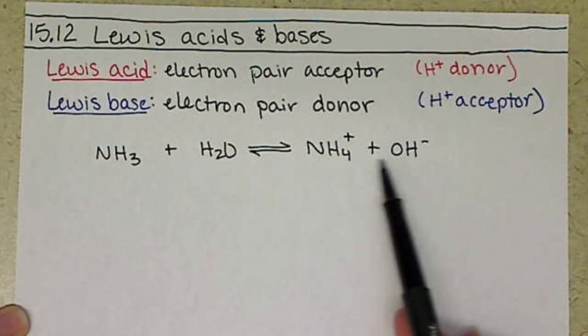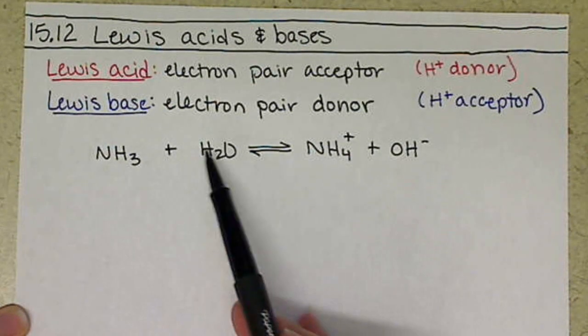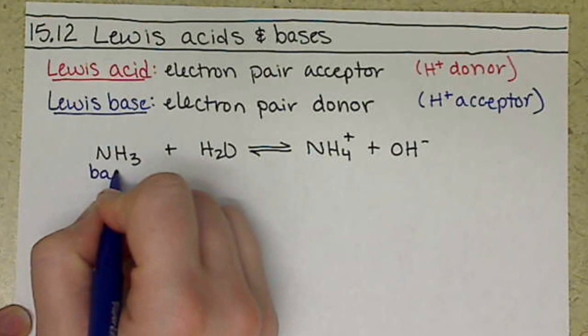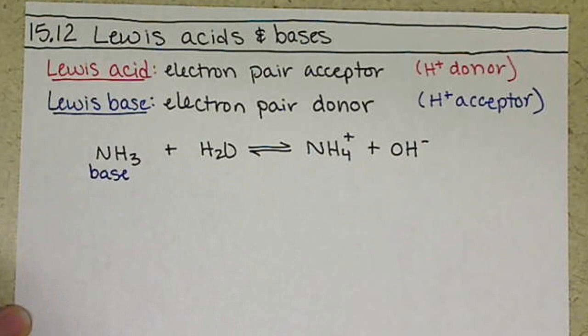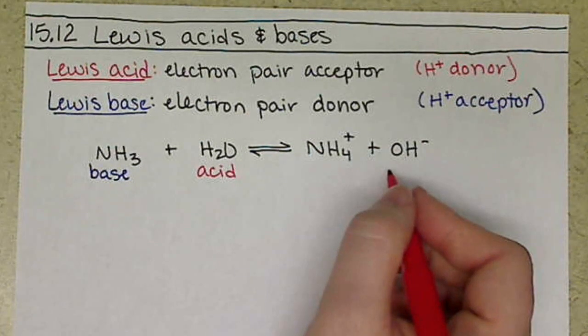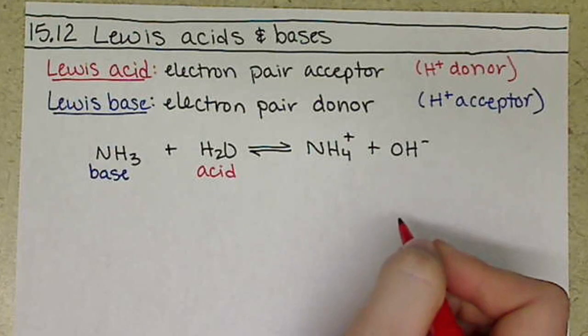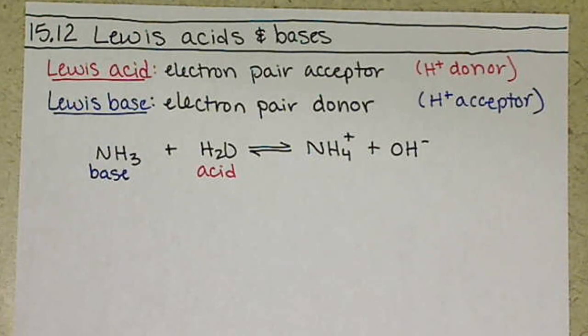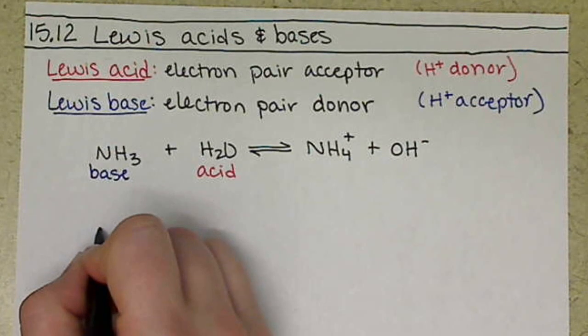Now, we looked at this identifying our base, our acid, let's just label those, our base, our acid, as where the proton's going. For Lewis acid and Lewis base, we want to figure out where the electrons are going. So we have to look at our Lewis structures.